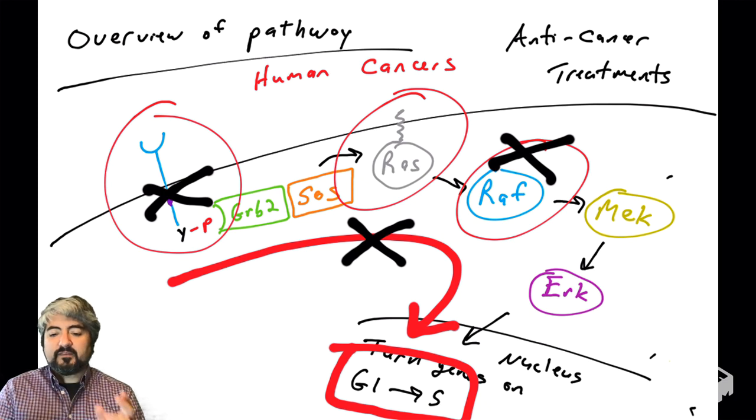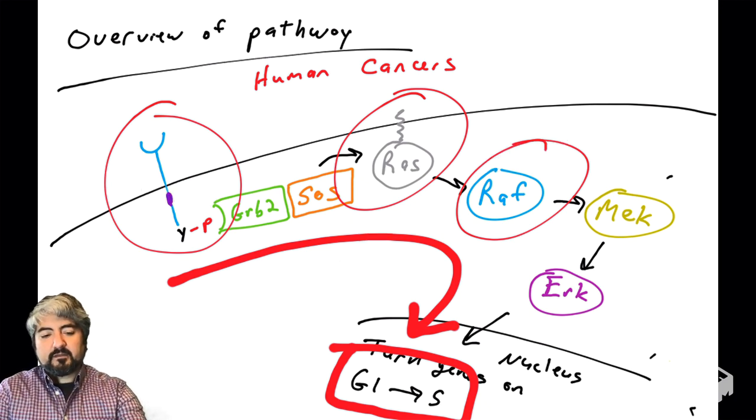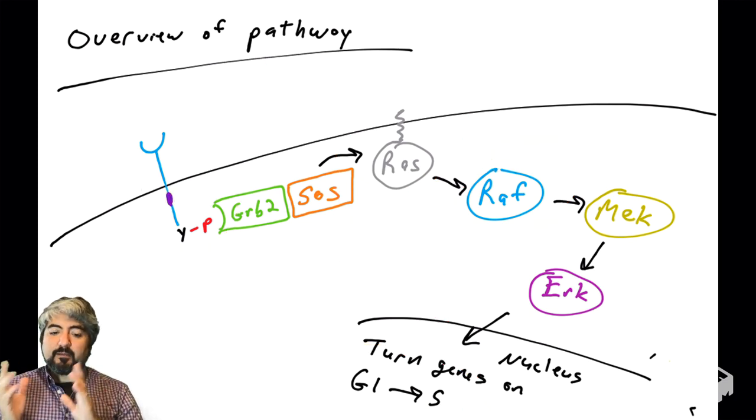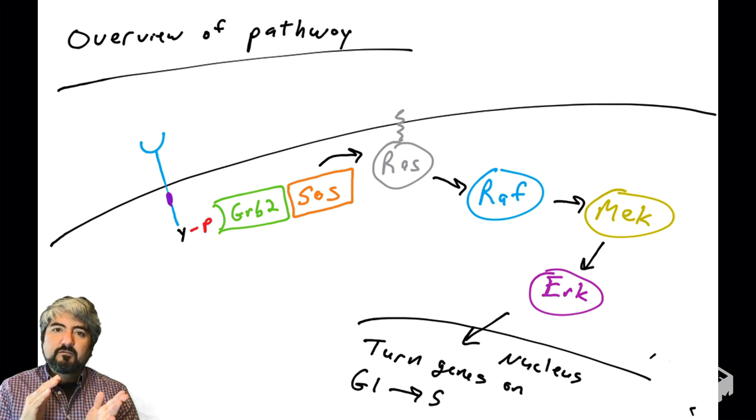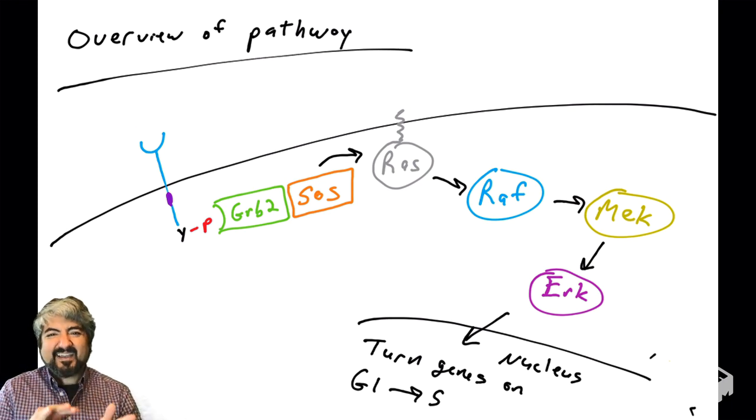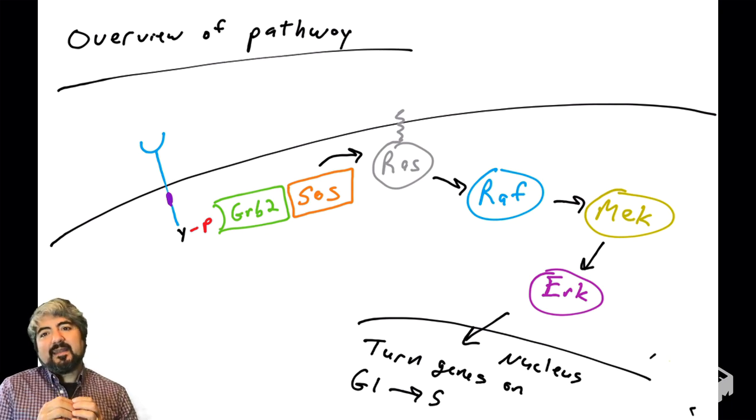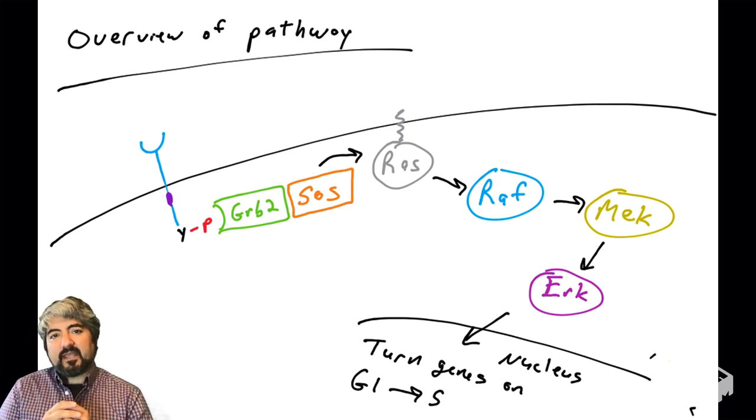So we are going to go through all of these proteins on this slide. We're going to learn about GRAB2, SOS, RAS, RAF, MEK, and ERK, and how they are all regulated, and how they are dysregulated in human cancers.